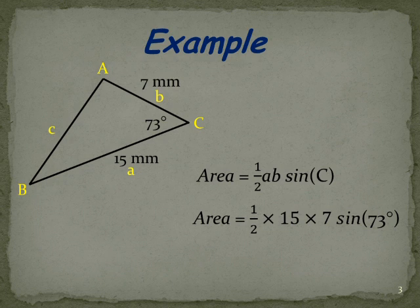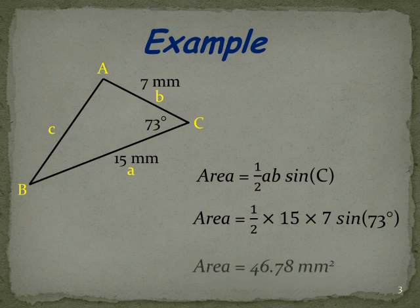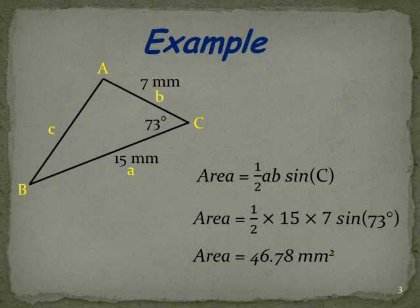So we substitute in. So in this case the area is a half times 15 times 7 times sin 73 degrees. Put it in our calculator and we find in this case it's 46.78mm squared. Ready to move on?